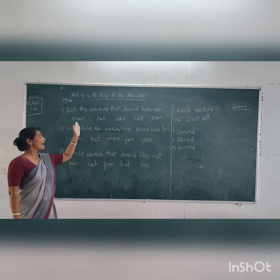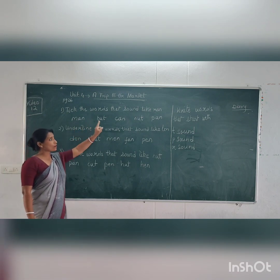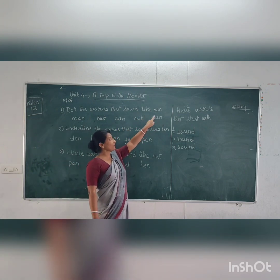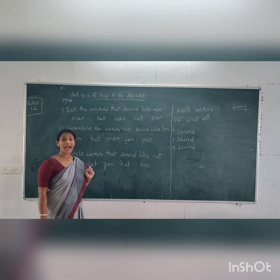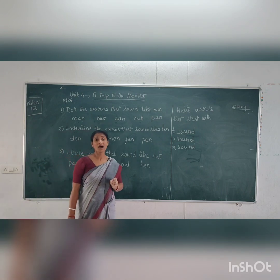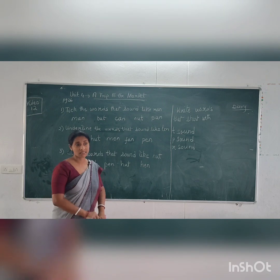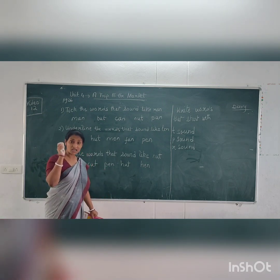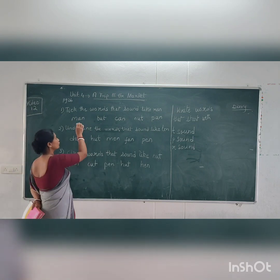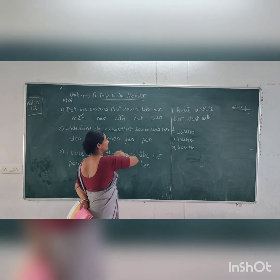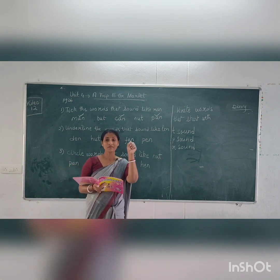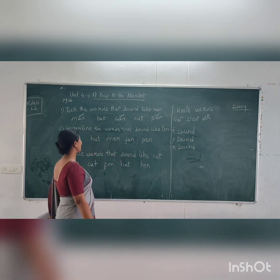Now see, 'man' sounds like 'ran' — yes. 'Can' sounds like 'ran' — yes. 'Pan' sounds like 'ran' — yes. But 'but' and 'nut' — no, those have the 'ut' sound, not the 'an' sound. So you will tick man, can, and pan — the words with the 'an' sound.